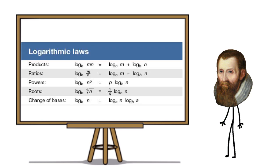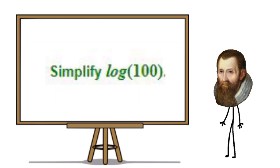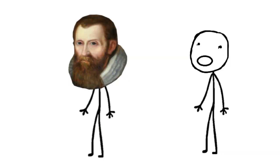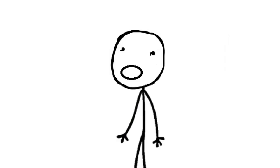Like every other math concept, logarithms have their own rules. Let's simplify log 100. Since 100 equals 10 to the second power, then log 100 equals log(10²) equals 2. I hope you enjoyed learning about John Napier's life and his contribution to math. Thank you for watching and have a nice day.